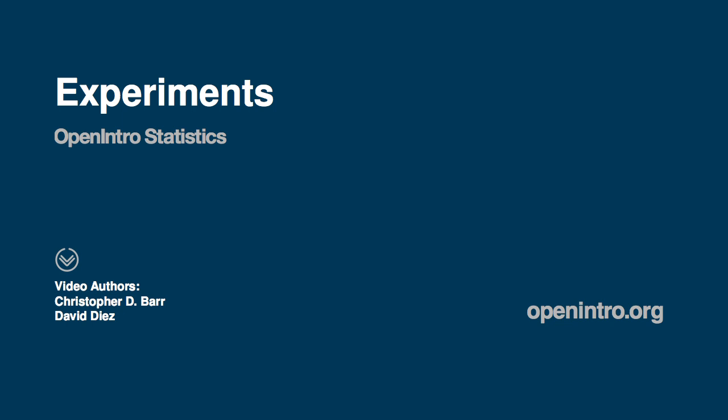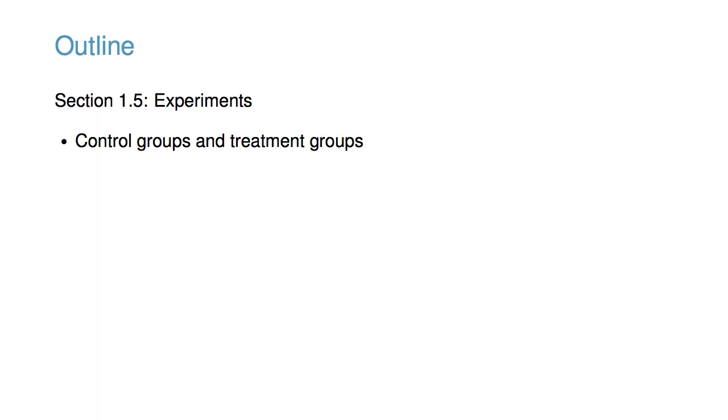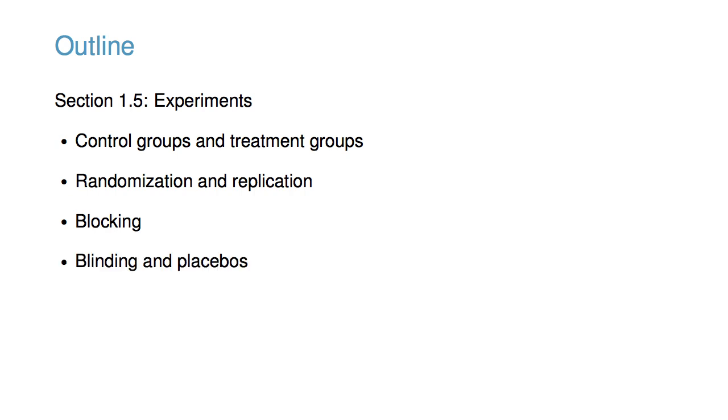This video accompanies the discussion of experiments in OpenIntro Statistics and introduces the basic principles of experimental design. Experiments are particularly important due to their fundamental role when trying to show a causal connection between two or more variables. In particular, we will learn about the difference between control groups and treatment groups, study methods of randomization and replication, as well as blocking, and we will also consider the importance of blinding and placebos.